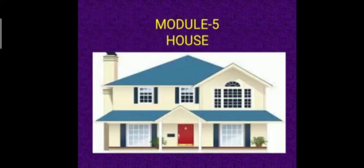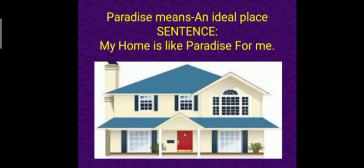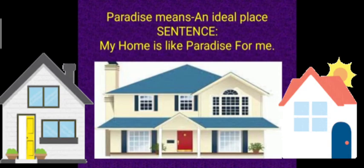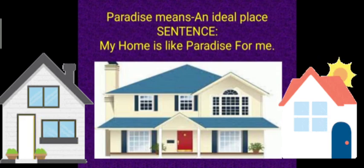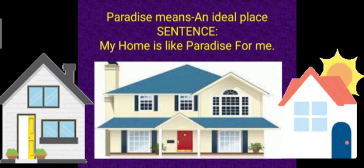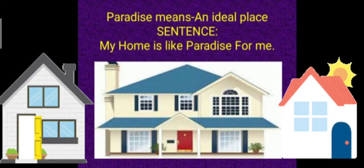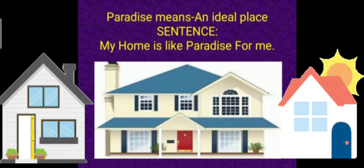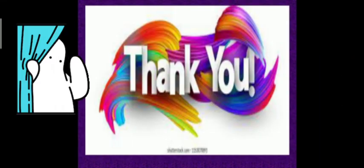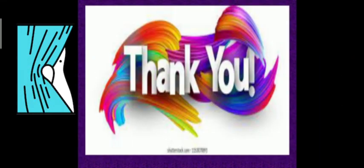Module 5 is house. The next word is paradise, which means an ideal place. The sentence is: my home is like a paradise for me. Thank you everyone.